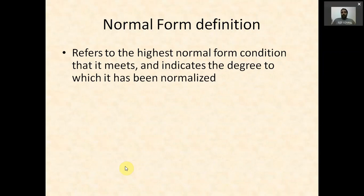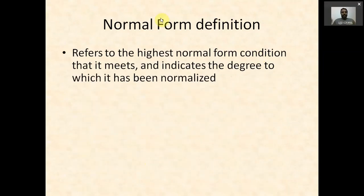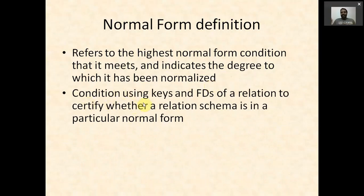Normal form refers to the highest normal form condition that a relation meets and indicates the degree to which it has been normalized. If we say a relation is in second normal form, it means it satisfies all specified conditions for that form. This condition is based on keys and functional dependencies of a relation.